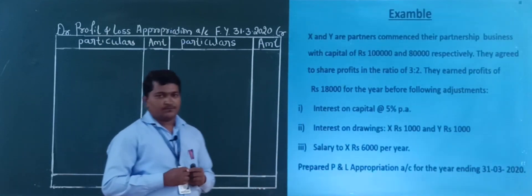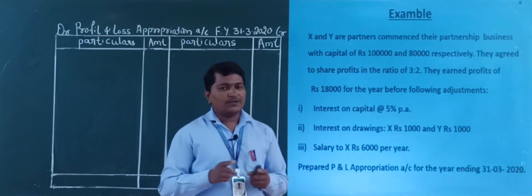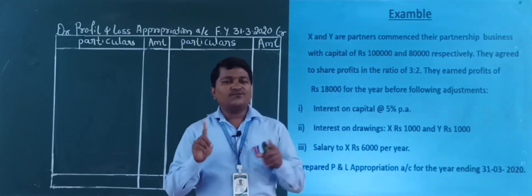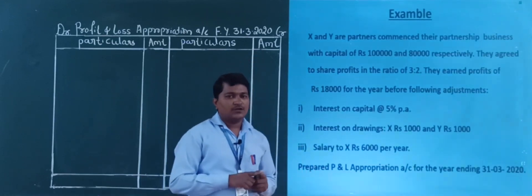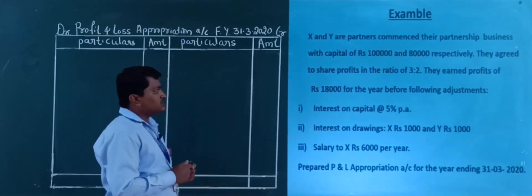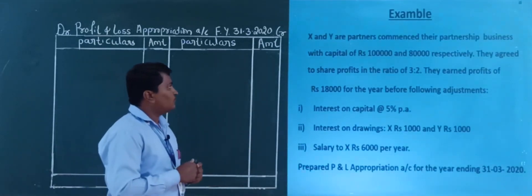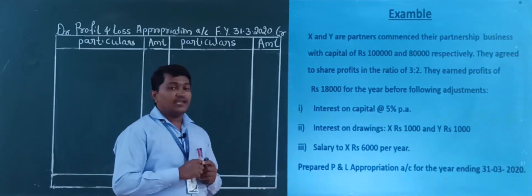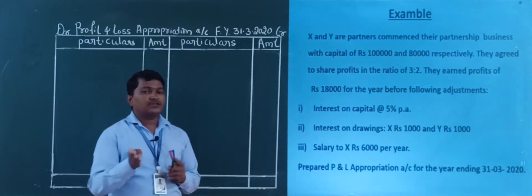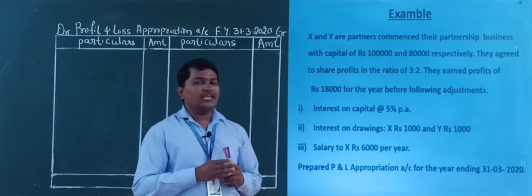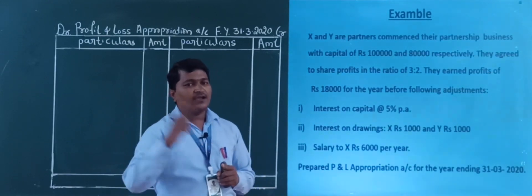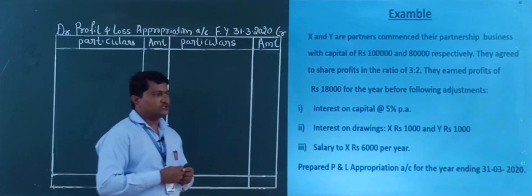So this is the problem we need to solve for profit and loss appropriation account. First, read the problem clearly. X and Y are partners who commenced their partnership business with capital of rupees 1 lakh and 80,000 respectively.